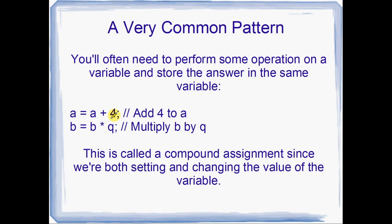Okay, a very common pattern. Yeah, we looked at this a little bit in the very first shoot, but it's really, really common to perform an operation on some variable, say a in this example, and store the result in the same variable. a equals a plus four, for example, to mean add four to the value in a. Or b equals b multiplied by q would mean multiply the value in b by q, whatever's in q. And this is called the compound assignment, since we're assigning, but we're also doing an operation. So it's compound. It's an assignment, but it's made up of other things.